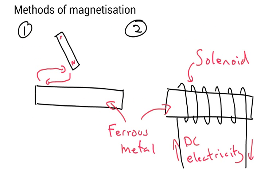Methods of magnetization. I've got two diagrams here of how you can magnetize a piece of ferrous metal. One method is you get a magnet, and you just rub just one half of the magnet going round and round like this, and eventually you'll create magnetism inside your metal.